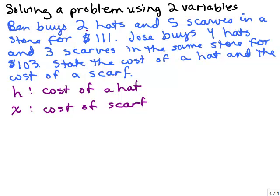First let's see what happens to Ben. He buys two hats and five scarves. So he buys two hats, each hat costs H dollars, so he pays 2H total for the two hats. Plus he also has to pay for the scarves. He bought five scarves, each one costs X dollars, so that's 5X. The total amount he pays is $111. So this first equation tells you what Ben pays: 2H + 5X = 111.